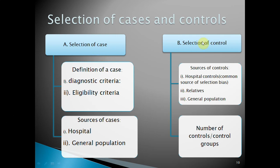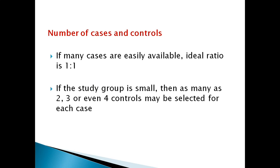Selection of cases is based on diagnostic or eligibility criteria. Cases can be taken from hospital or general population. For selection of controls, they should be from hospital if the cases are from hospital, or they can be relatives of the cases or from the general population. The ideal ratio is one control to one case. If you take one case you should have a minimum of one control, and having more controls makes the study better — a maximum of four controls per case is useful; beyond four it is not much more effective.